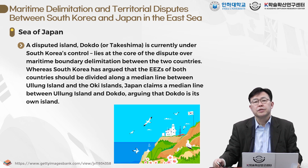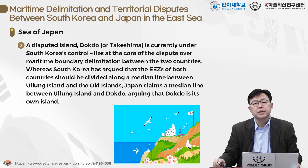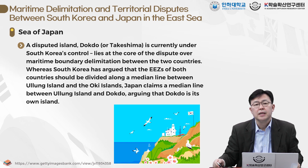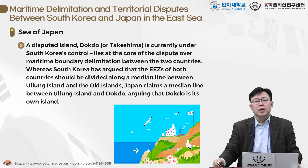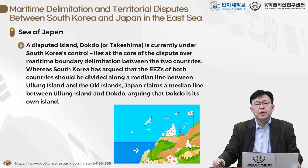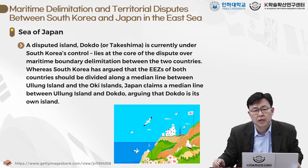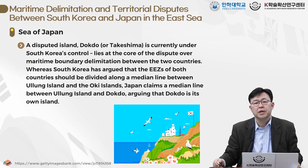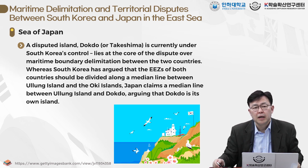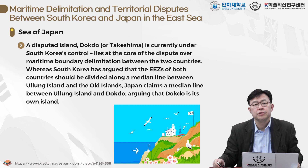South Korea has argued that the EEZ of both countries should be divided along the median line between Ullung-do and Oki Island, while Japan claims a median line between Ullung-do and Dokdo, arguing Dokdo is its own island. Both countries claim Dokdo within their own territories. The recent standoff by the coast guards of the two countries over Japan's attempt to conduct a maritime survey in the disputed waters of Dokdo represents the volatility of maritime issues between the two countries.